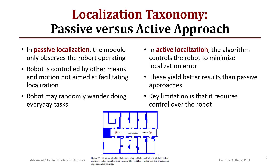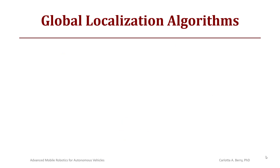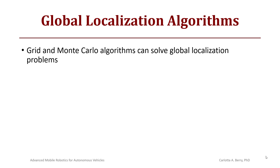The key limitation of active localization is that it requires control over the robot, which may prevent other tasks. Figure 7.3 from the text shows a typical belief state during global localization where the world is symmetric. In a hallway, the robot reaches a local maxima and cannot localize until it enters a room, because the rooms are distinct. Until the robot moves into a room, it cannot determine where it was in the hallway, but once inside the room it is completely localized.